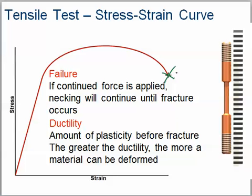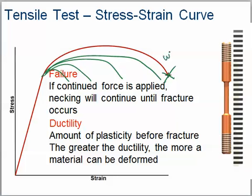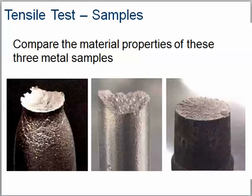The amount of plasticity before fracture determines the greater ductility — the more material can be deformed. Some curves are short, some go out further. The longer this curve is, the more ductile the material is. Wire versus cast iron is a good example — cast iron isn't very ductile and has a very short curve. These three examples show which ones are most ductile: one was necking and very ductile, one had a little ductility, and the last had no ductility at all and simply broke.